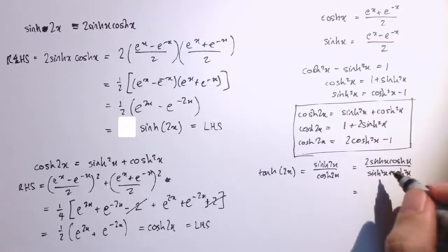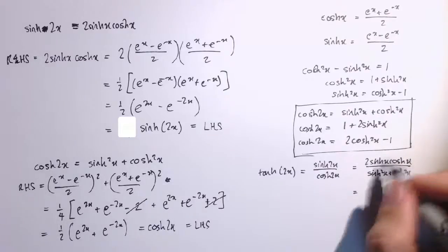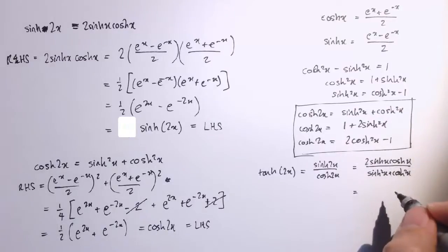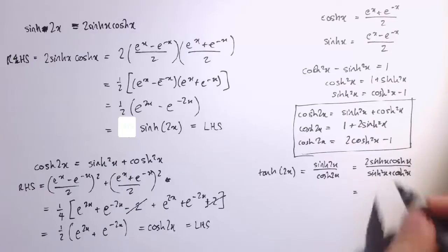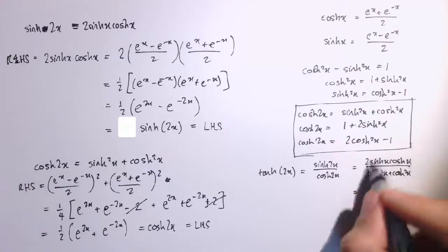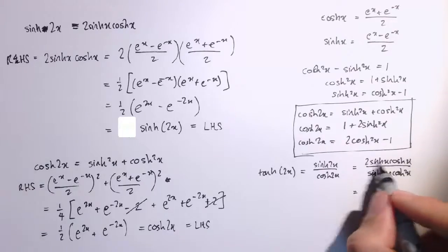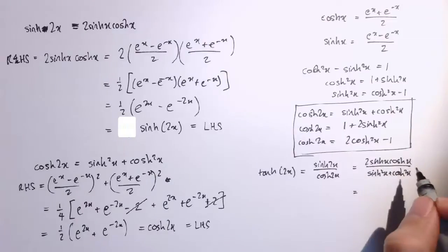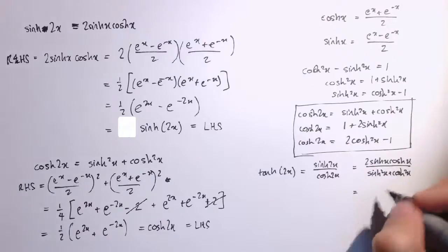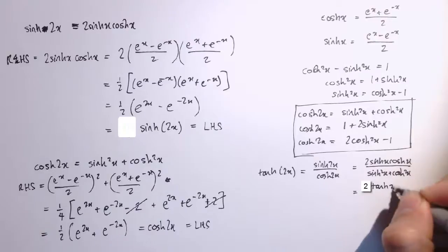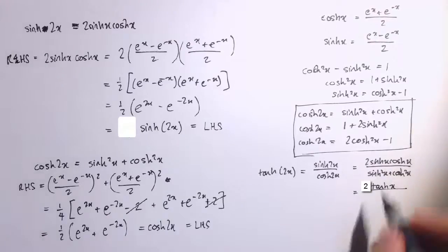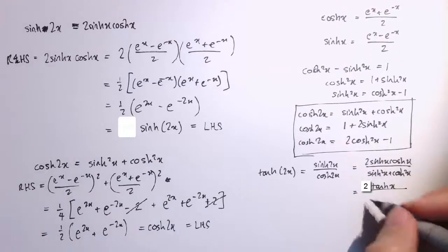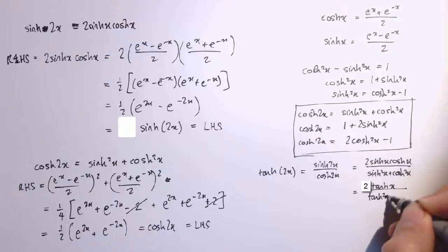So if we divide through top and bottom here by cosh squared x, then I'll cancel out a factor of cosh there and I'll get 2 sinh x over cosh x, sinh x over cosh x is tanh x, so that's tanh x on the bottom, dividing it through by cosh squared, sinh squared over cosh squared is tanh squared x, and cosh squared over cosh squared x is 1.